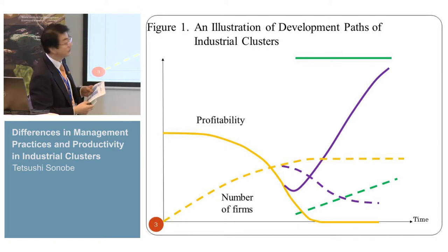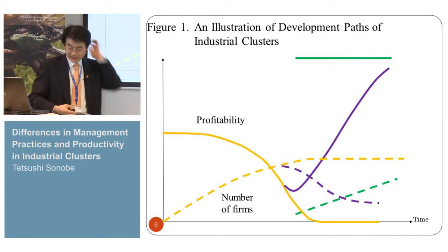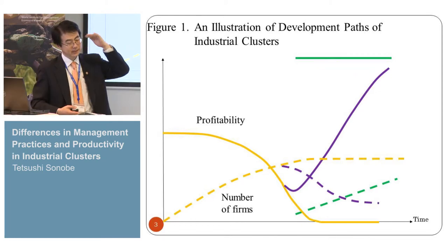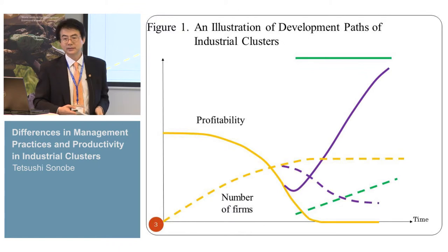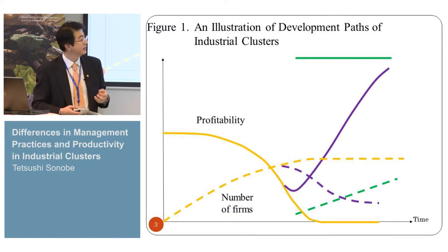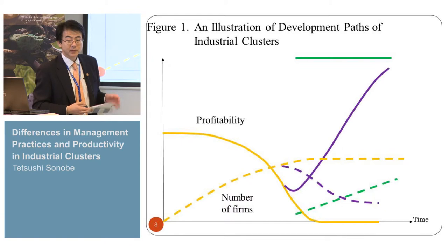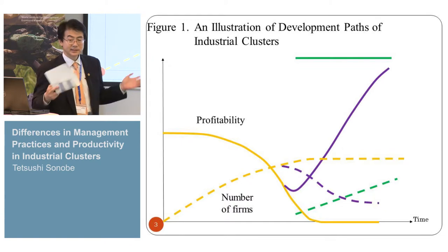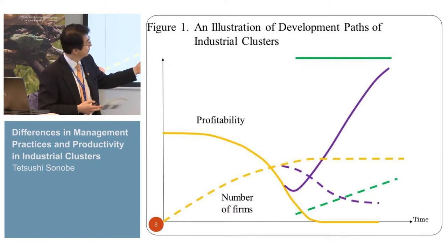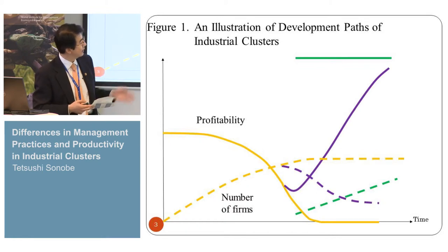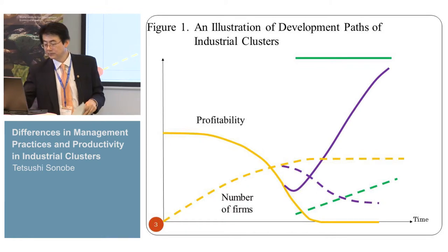The third type — the green one — is that from the beginning, the industry has high productivity, maybe because they started with sufficient knowledge or managerial and technological capabilities. They tend to be exporting industries, so the market is very large. Although the number of producers increased, there is no saturation, and steady growth can be observed.